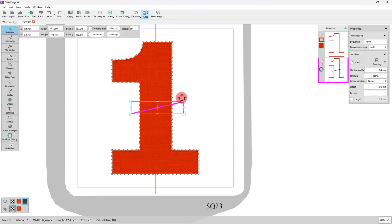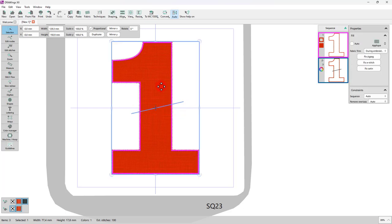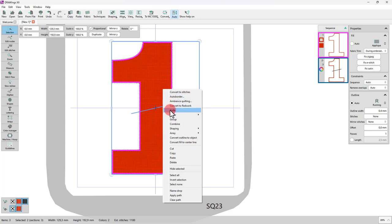Now, select this cut line along with the applique part. Then, while having them selected, right click and use the Knife tool.